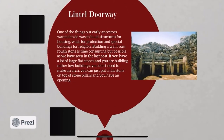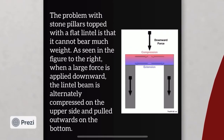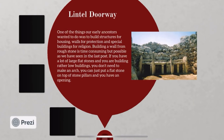How did arches become a part of architecture? It is through lintels. One of the things our early ancestors wanted to do was to build structures for housing, walls for protection and special buildings for religion. But lintels faced a huge problem, which is the main reason why arches evolved to this extent. The problem with stone pillars topped with a flat lintel is that it cannot bear much weight. As a result, the lintel beam will be under high compression, which will obviously lead to the breakage of the whole structure.